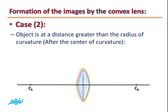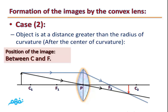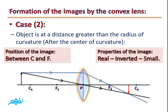Case 2: the object is at a distance greater than the radius of curvature, i.e., beyond the center of curvature. The first light ray, parallel to the principal axis, refracts and passes through the focus. The second ray passes through the optical center without refraction. The image is formed between C and F; it is real, inverted, and small.